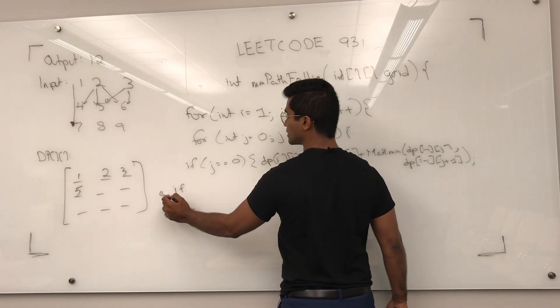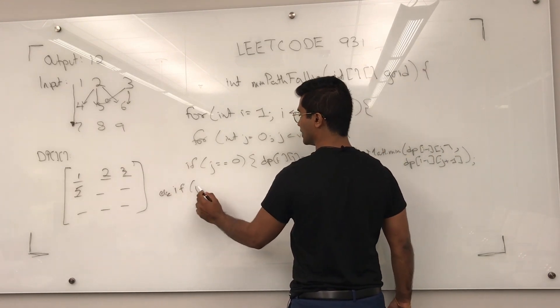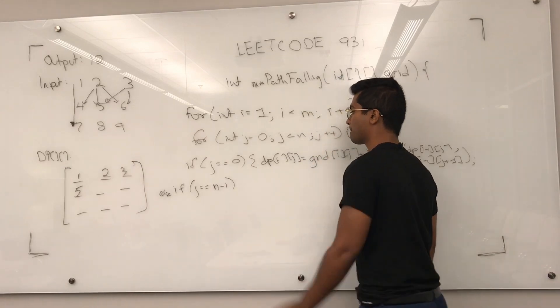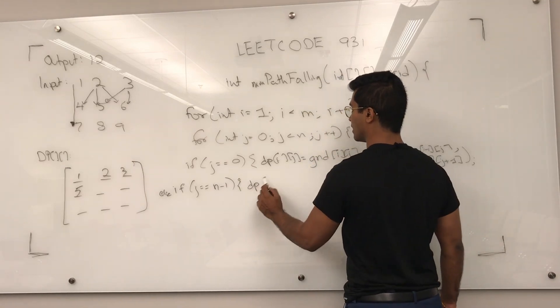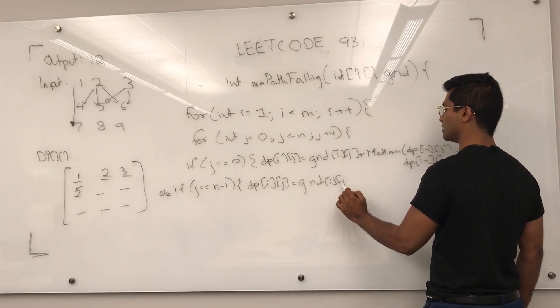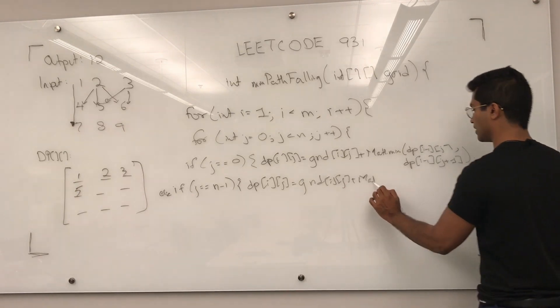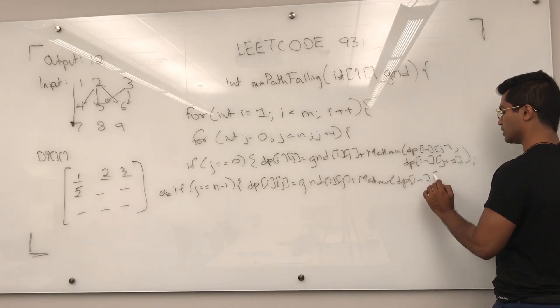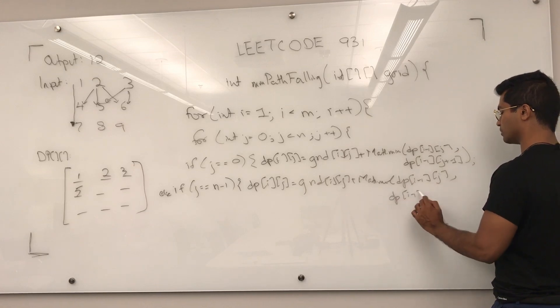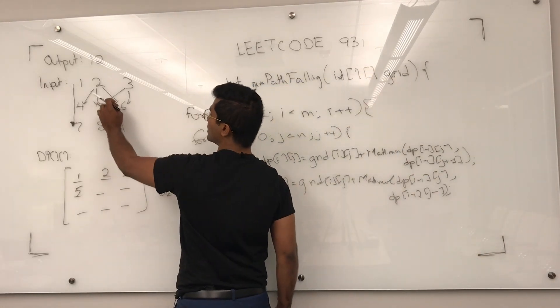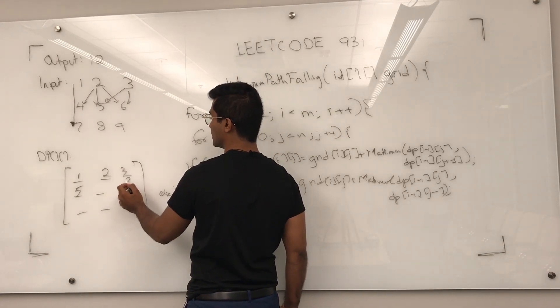Now, else if j is equal to n minus 1, dp[i][j] is going to be grid[i][j] plus Math.min dp[i-1][j], or dp[i-1][j-1]. That's for this case. So, this one is going to be either 6 plus 2 or 6 plus 3, it's going to be 8.